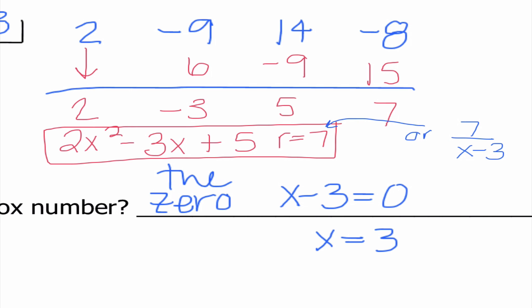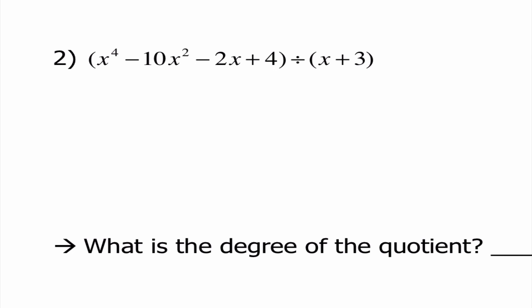To be honest, synthetic division doesn't get much more difficult than this. So that's why we are only going to go ahead and do two more examples. When I'm looking at number 2, the big thing that jumps out at me is that I am missing an x cubed because it jumps from x to the 4th to x squared. So I'm going to fill in 0x cubed. So this time in my box, my box number is going to be negative 3 because when I set this factor equal to 0, we would get negative 3.